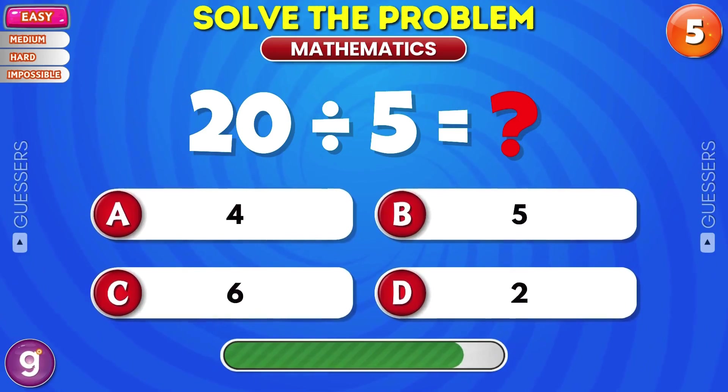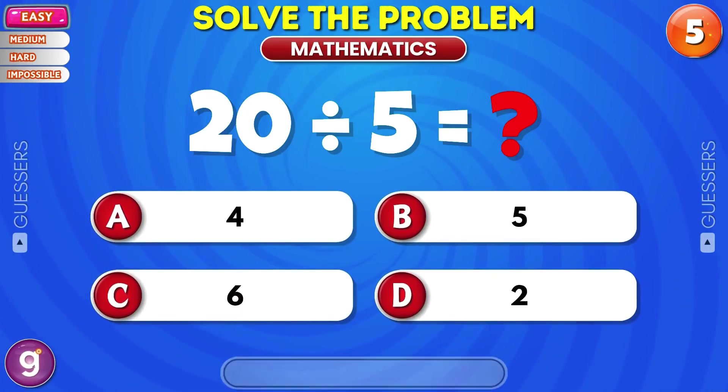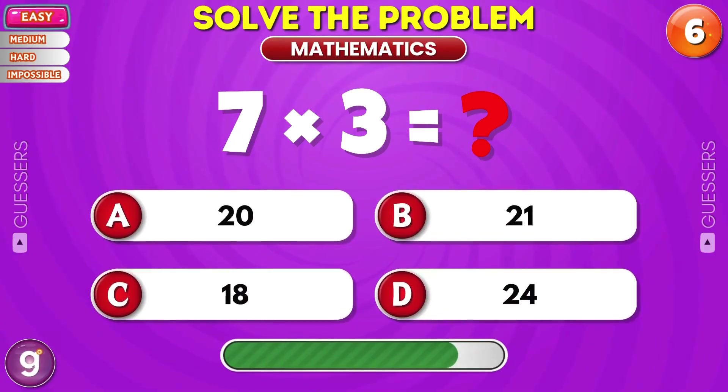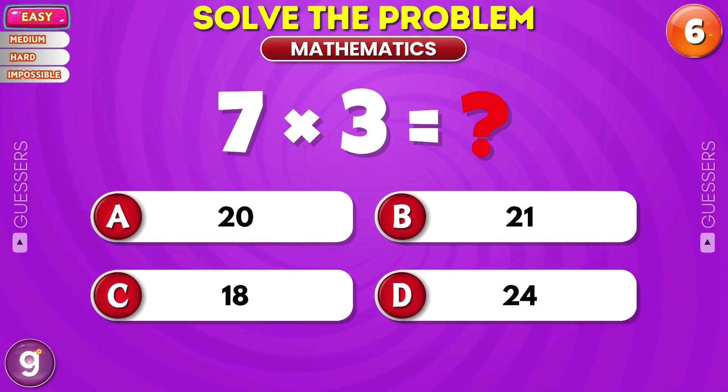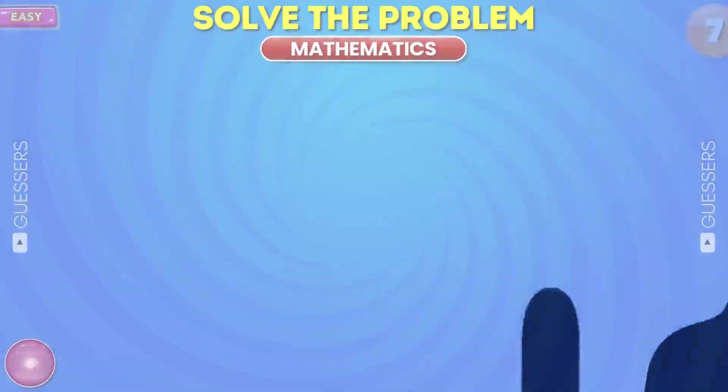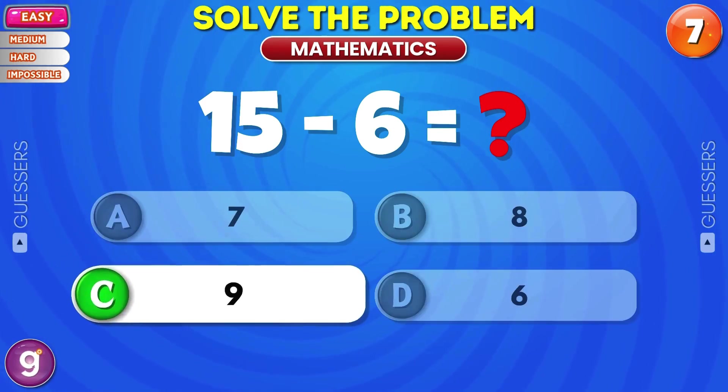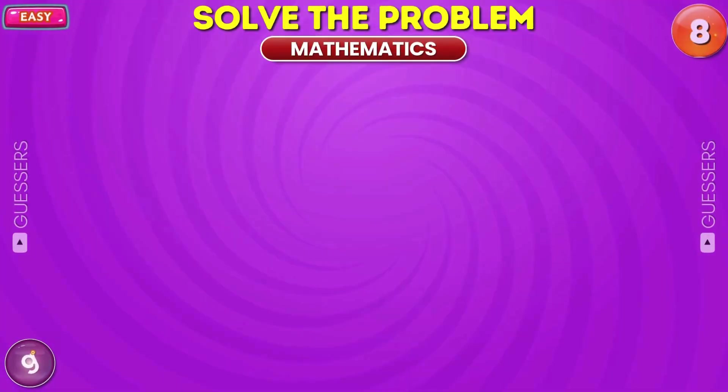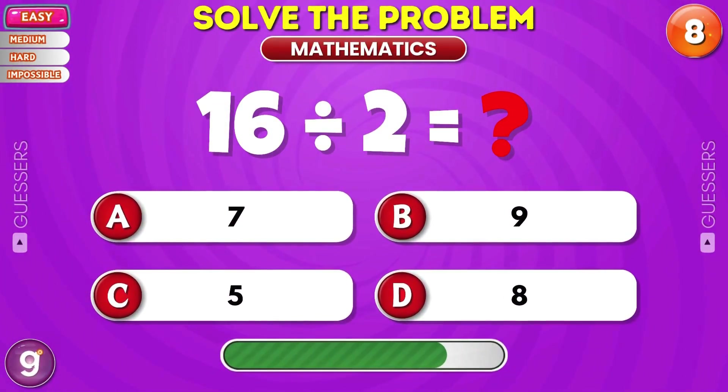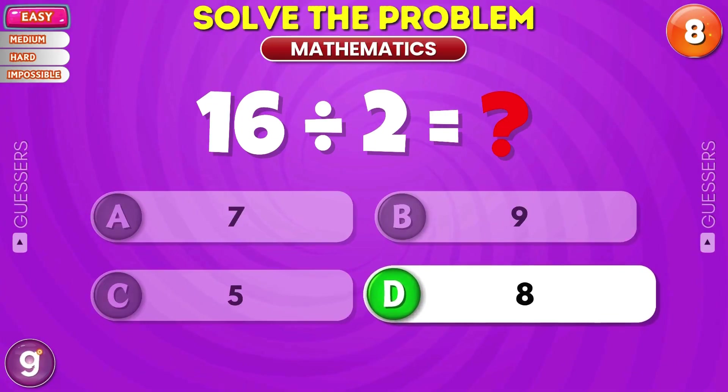What is 20 divided by 5? 4 is the answer. What's 7 into 3? 21. What's 15 minus 6? 9. How much is 16 divided by 2? The answer is 8.